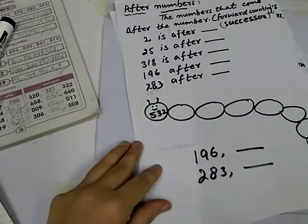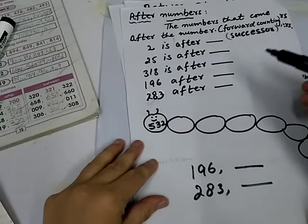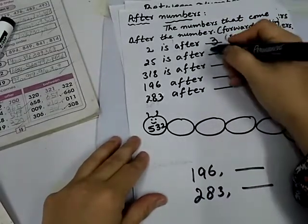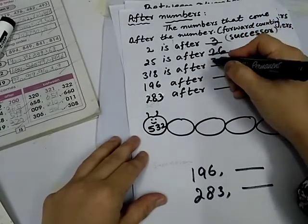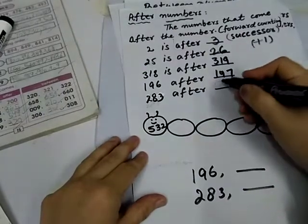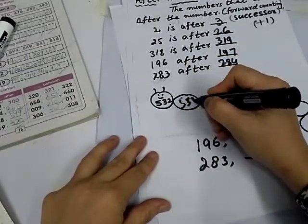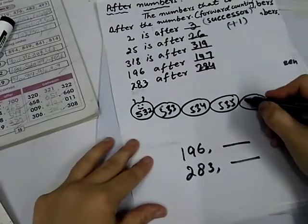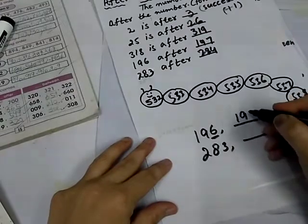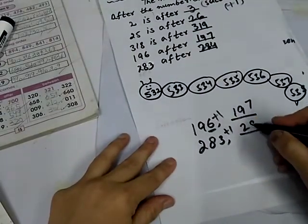Now, after number. The number that comes after the number is called after number. After number means forward counting or successor plus 1. 2 is after 3. 25 is after 26. 318 is after 319. 196 after 197. 283 after 284. Now, forward counting. 532, 533, 534, 535, 536, 537, 538. Check the first number. 190 plus 1. 7. 197. 283 plus 1. 284.